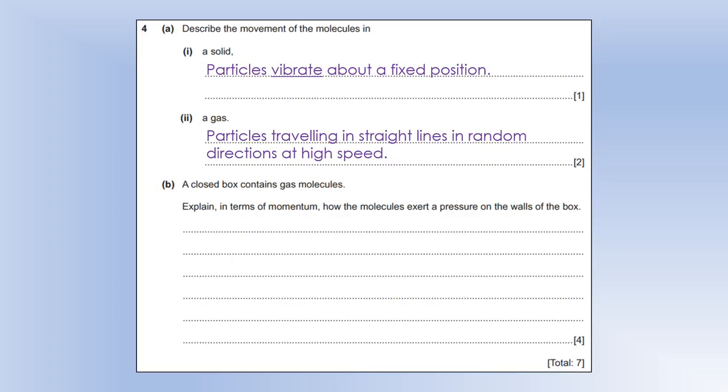So a closed box contains gas molecules. Explain in terms of momentum how the molecules exert a pressure on the walls of the box. So first thing is the pressure is due to collisions between the gas particles and the container. So reason that a force acts on the wall is because a force acts on the molecules from the container wall. And the reason we know there's a force acting on it is because the momentum of the gas particles is changing. If the direction of the gas particles is changing, their momentum is also changing. They're both vector quantities. So that's the first key thing. The momentum of the gas particles changes.